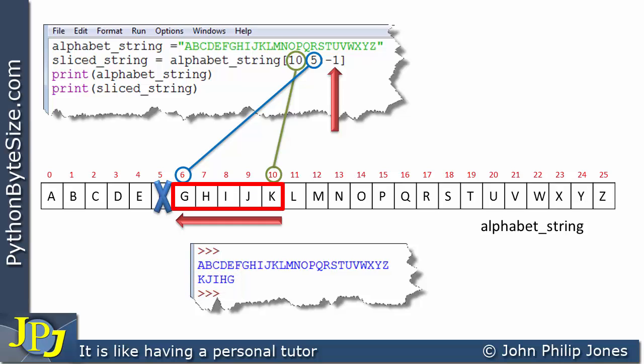In other words, it has been reversed. You can think of it as being reversed because we started at the K, went to the J, the I, the H, the G. So this particular variable here, the sliced_string, took the slice and you can see that slice got reversed.